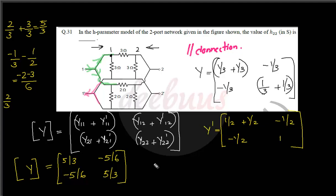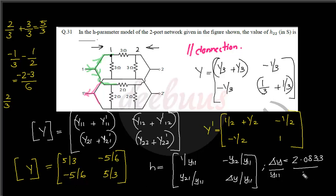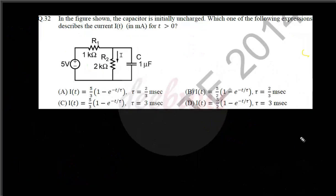Converting Y-parameters to H-parameters: h22 = ΔY / Y11, where ΔY = (5/3)(5/3) − (−5/6)² = 25/9 − 25/36 ≈ 2.0833. Then h22 = ΔY / Y11 = 2.0833 / (5/3) ≈ 1.25 siemens. The answer is approximately 1.24 siemens.